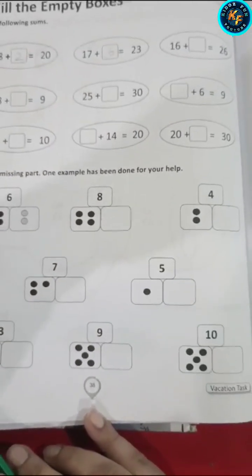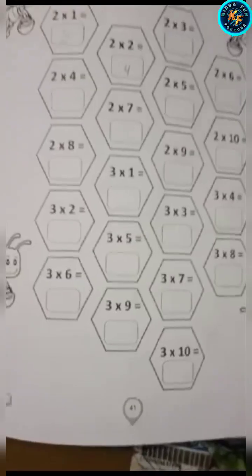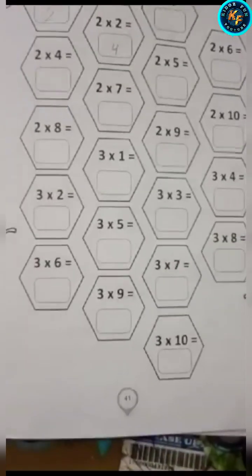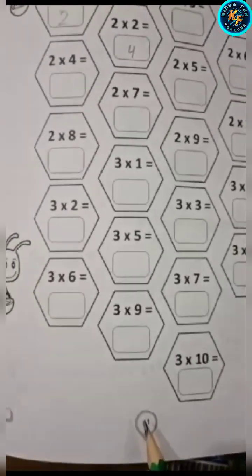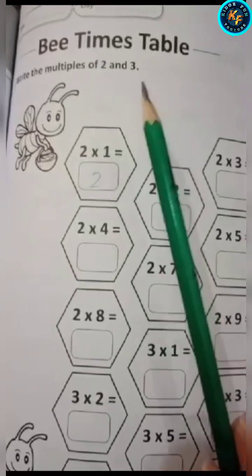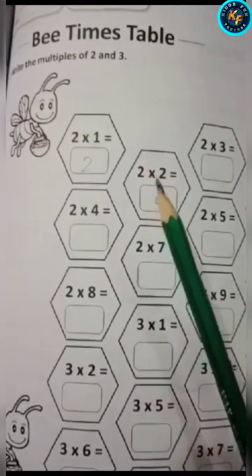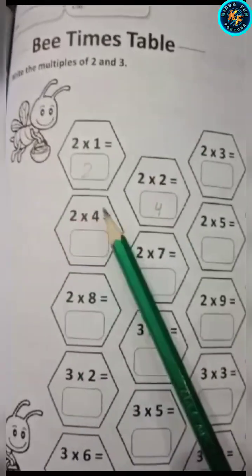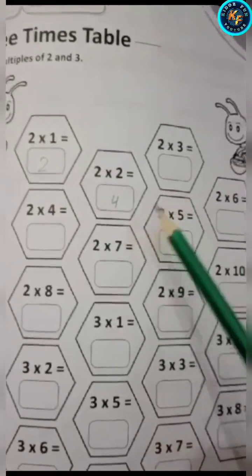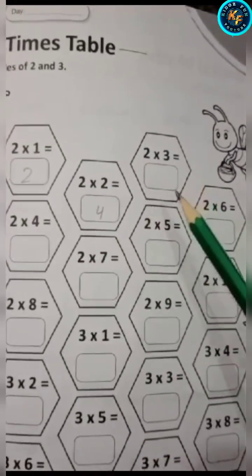Jazakumullahu khair. Assalamualaikum warahmatullahi wabarakatuh. Let's come to your math class. Open page number 41. Mention date and day. Write the multiples of 2 and 3. Here you have to write the multiples of 2 and 3 — like: 2 ones are 2, 2 twos are 4, 2 threes are 6, 2 fours are 8. So complete your page very carefully.